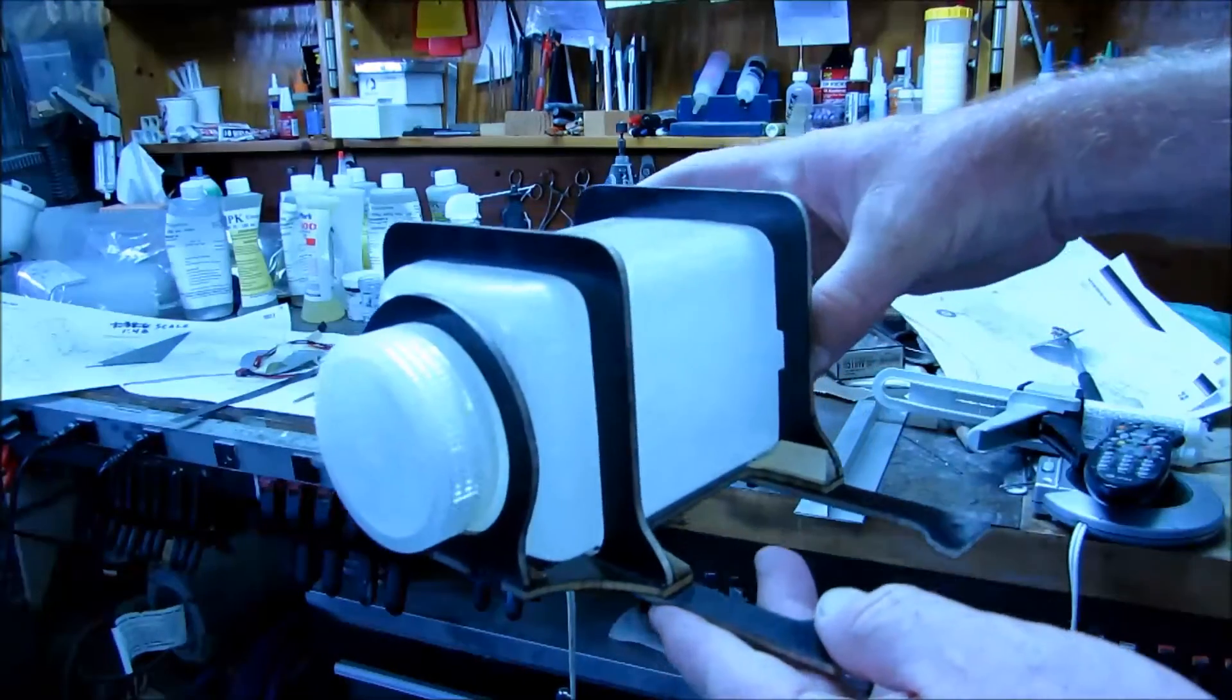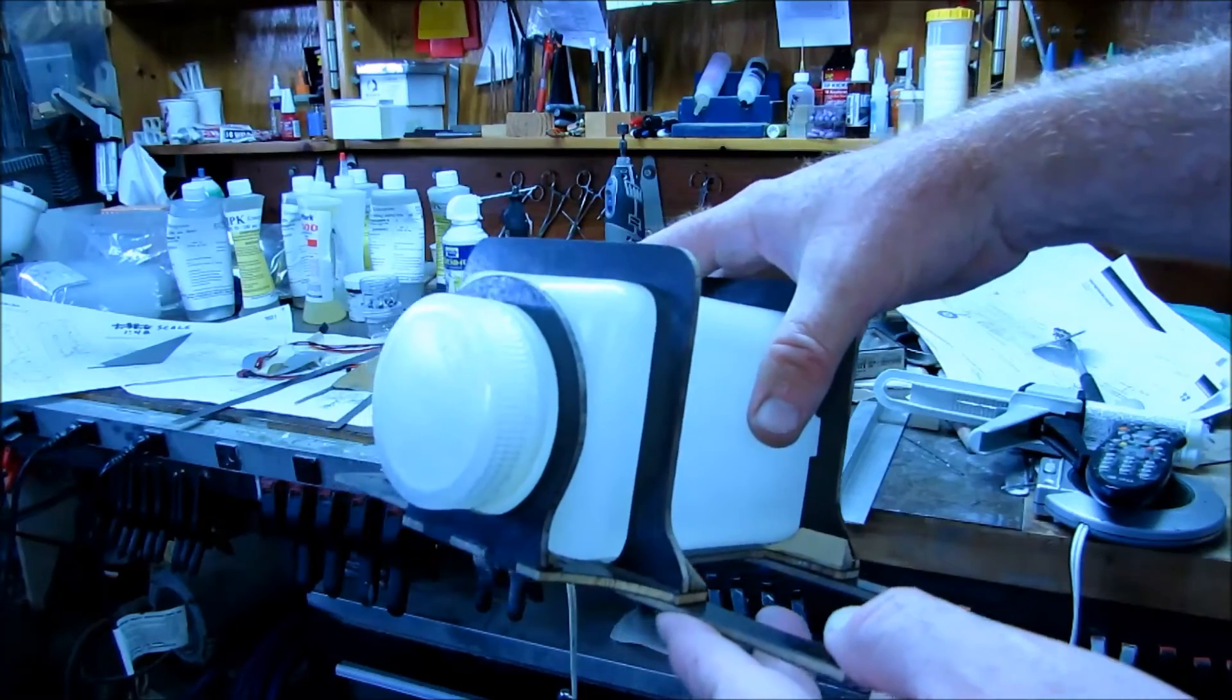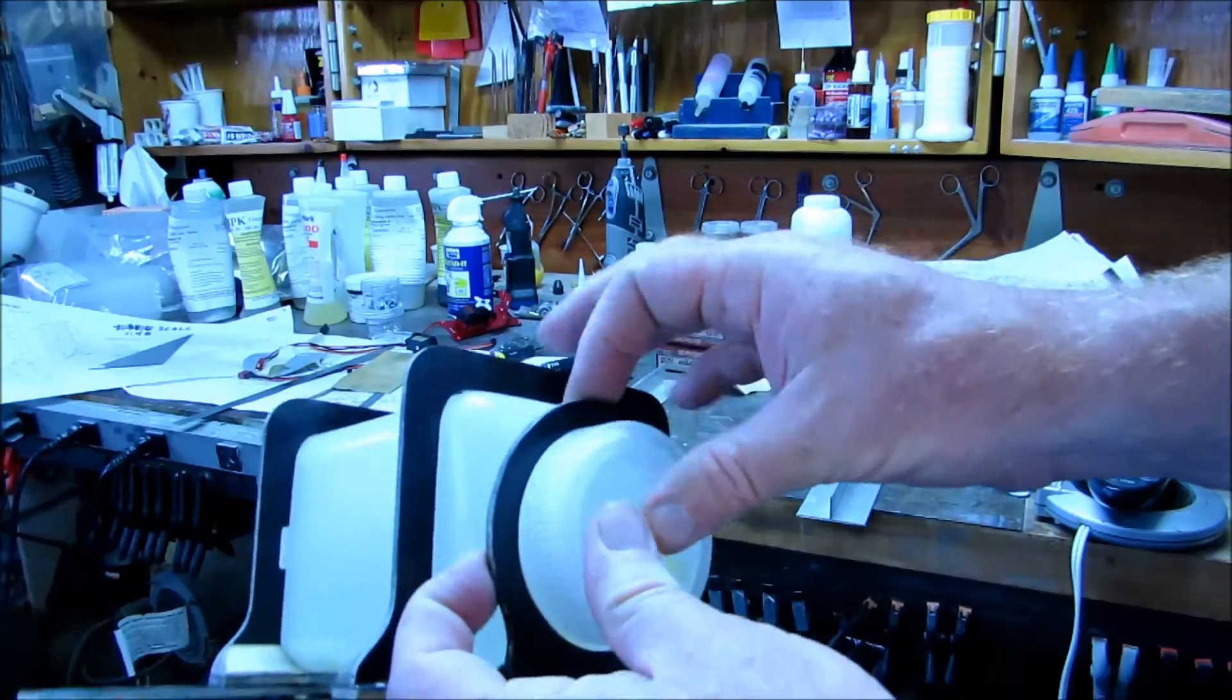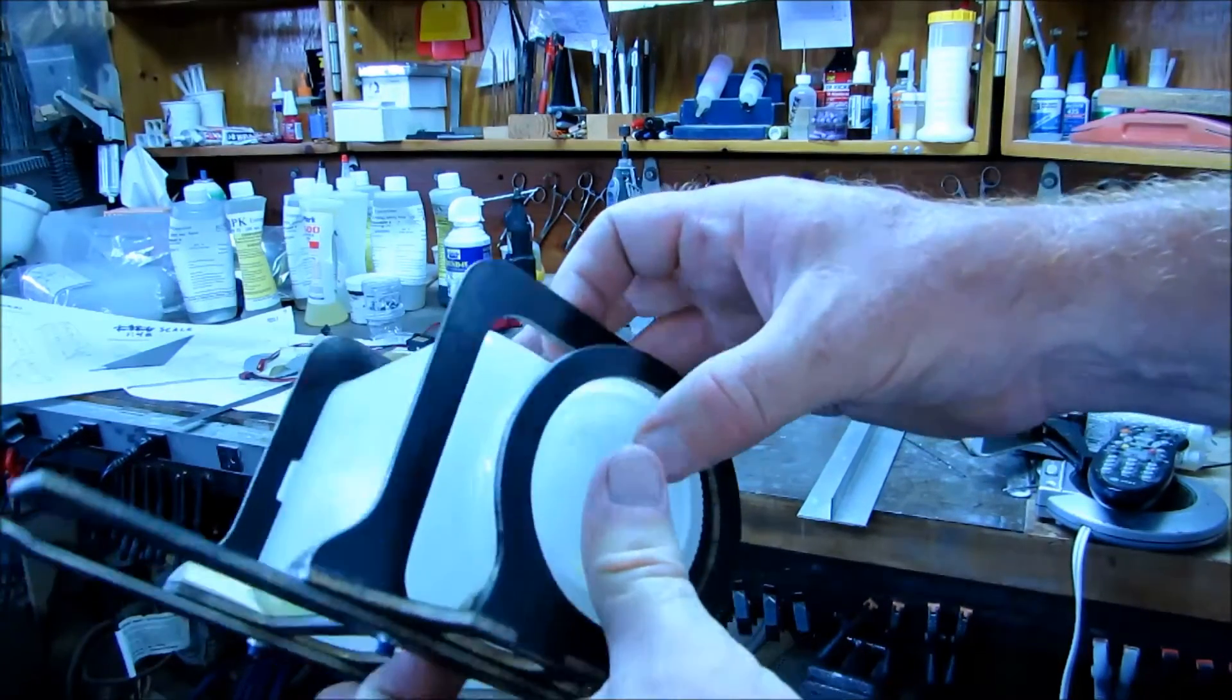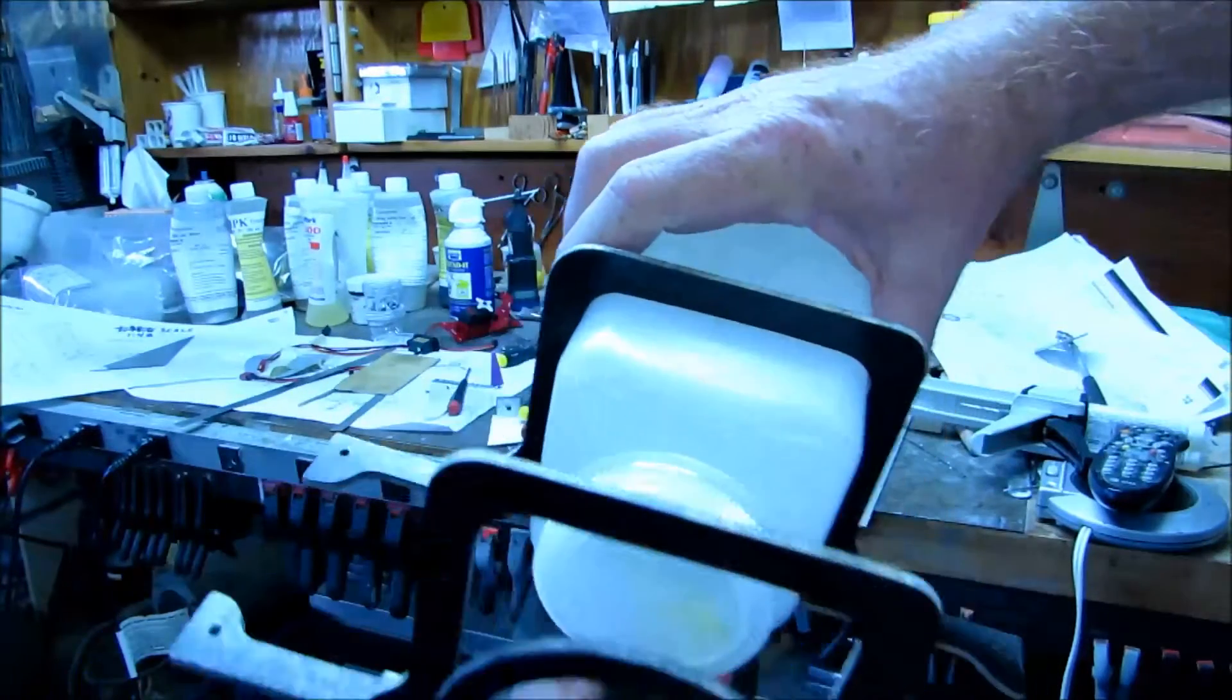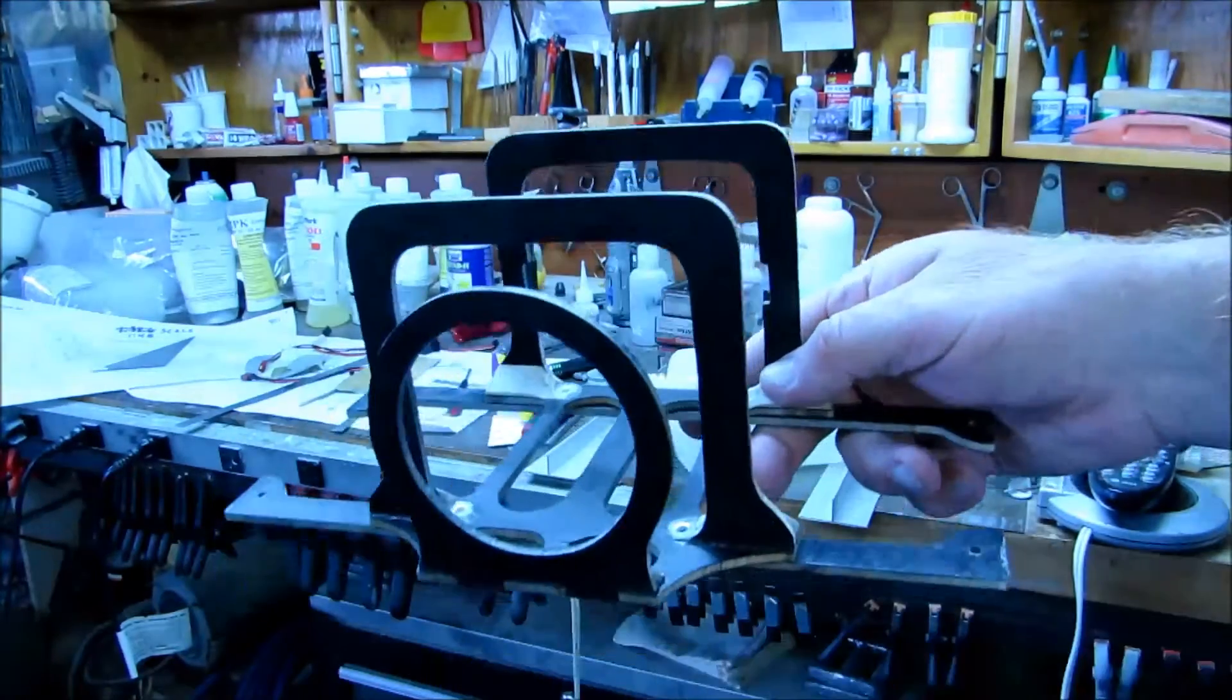This is a 32 ounce gas tank and I made this frame for it to hold it. It all kind of friction fits in here and there will be one piece of velcro that holds it all together.